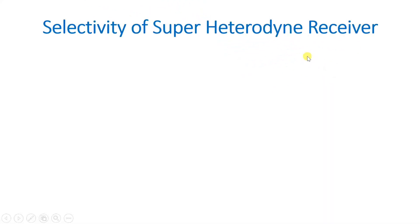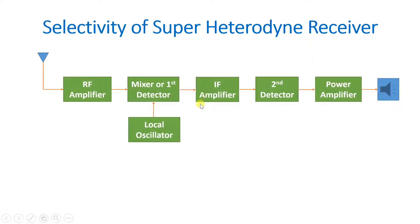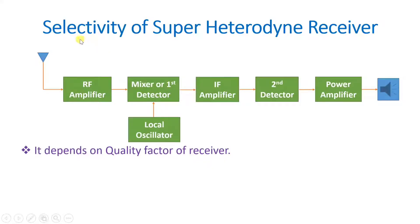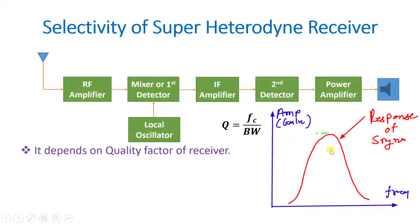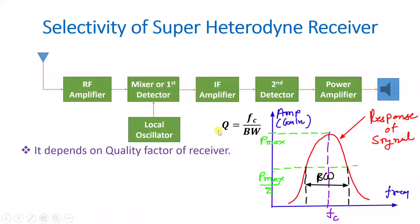Selectivity of the super heterodyne receiver is purely based on quality factor. The quality factor of the receiver defines its selectivity. Quality factor is defined as center frequency divided by bandwidth. Looking at a frequency-versus-gain graph, if a signal is received and we consider the half-power bandwidth, then quality factor Q = Fc / bandwidth. So quality factor defines selectivity.